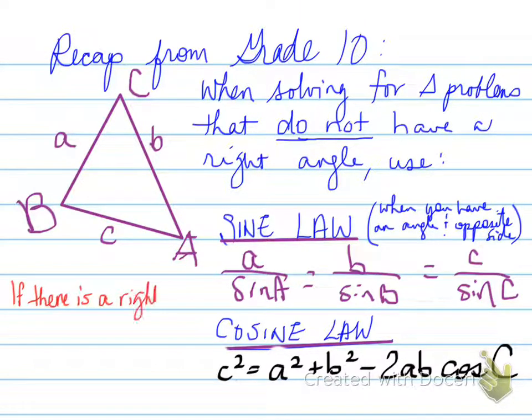If there is a right triangle, you must use SOH CAH TOA. You must use sine is equal to opposite over hypotenuse, cosine is equal to adjacent over hypotenuse, and tangent is equal to opposite over adjacent.